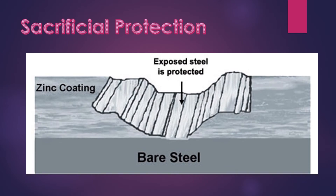This diagram shows an example of sacrificial protection using zinc coating. The zinc covers the bare steel. But when the zinc coating is damaged, the zinc will corrode in place of the steel — so the steel is protected.